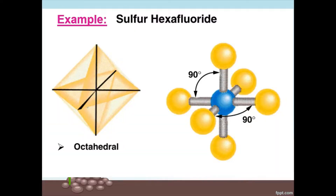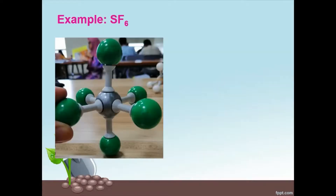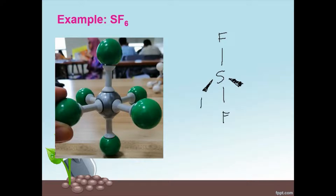Sulfur hexafluoride, SF6, is an example of an octahedral. All bonds have a 90-degree angle between each other. Sulfur is in the middle as the central atom. There are two lines on the plane in front of you, two wedge lines coming towards you, and two dotted lines going away from you. There is your octahedral.